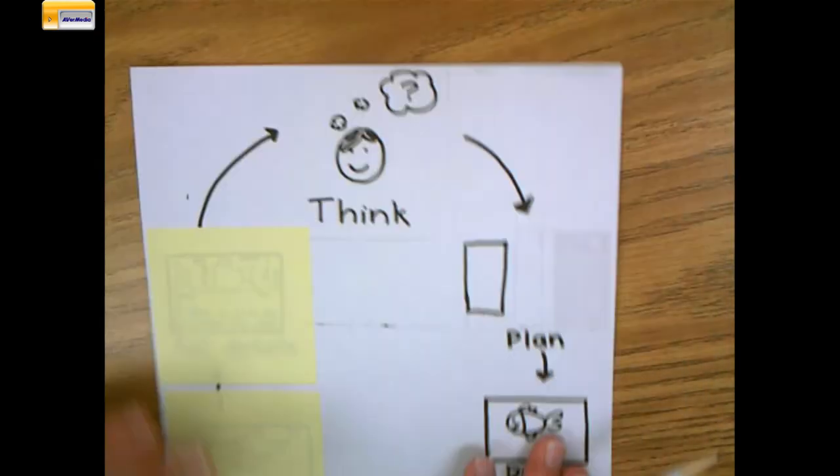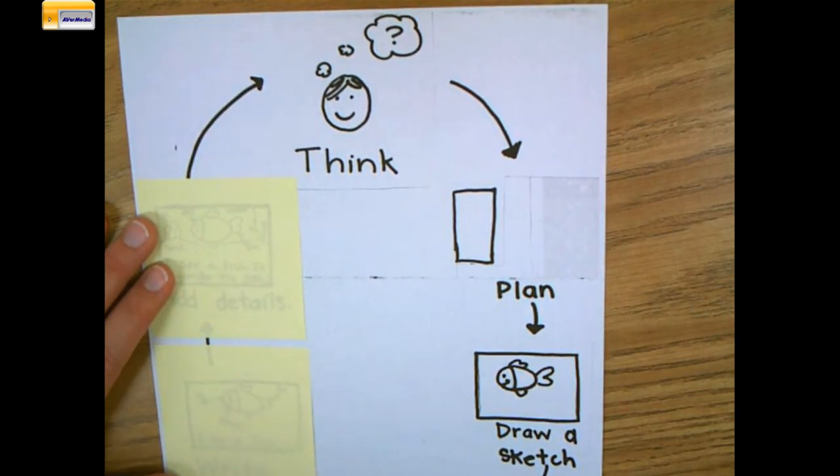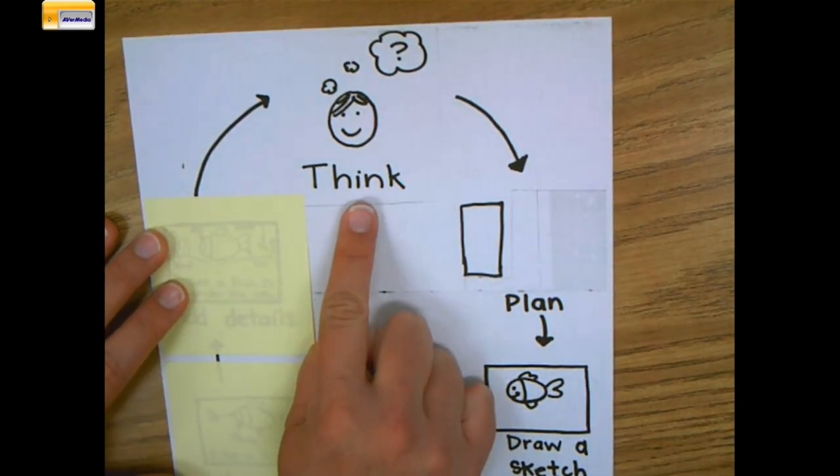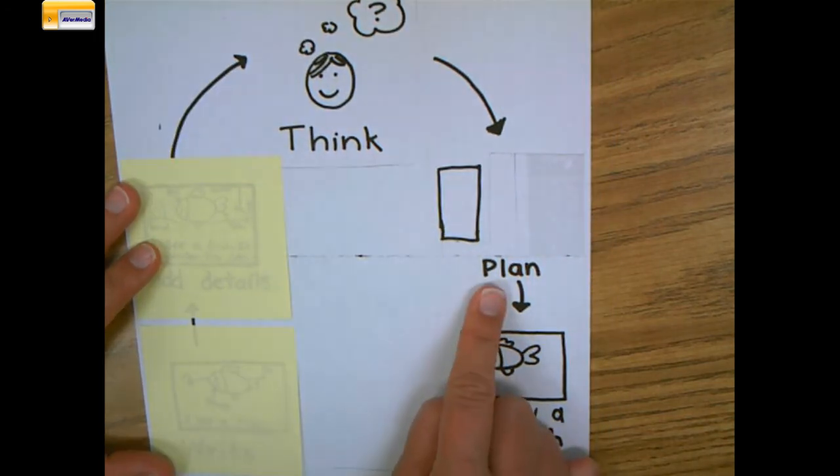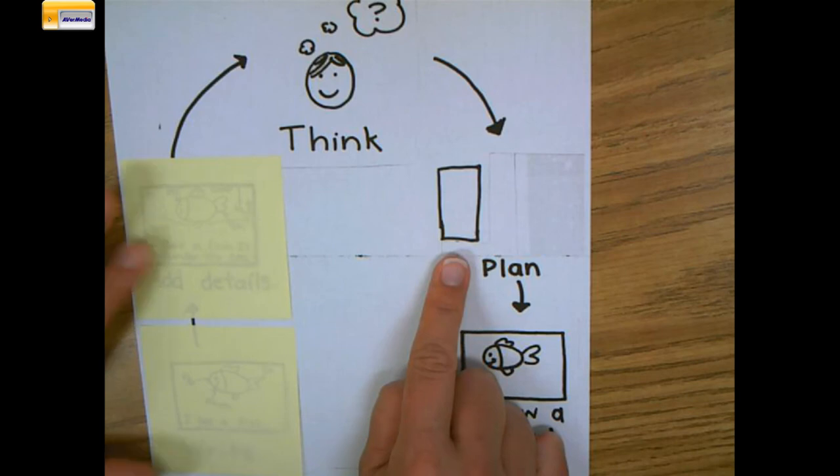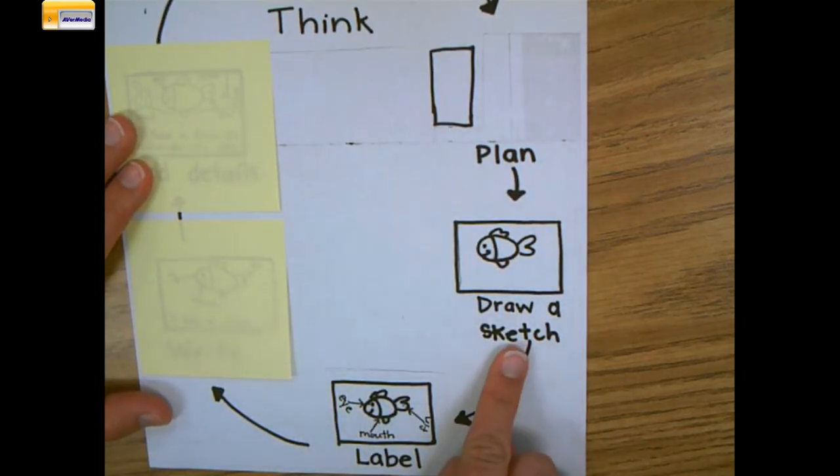Today when you start your piece of writing, think about all these steps that we've talked about so far. First you need to think about a time or place that you might want to write about. Then you're going to plan what's going to go on your paper. After that, draw a quick sketch to get your ideas down. And today we can start to add labels or words to describe parts of our picture.